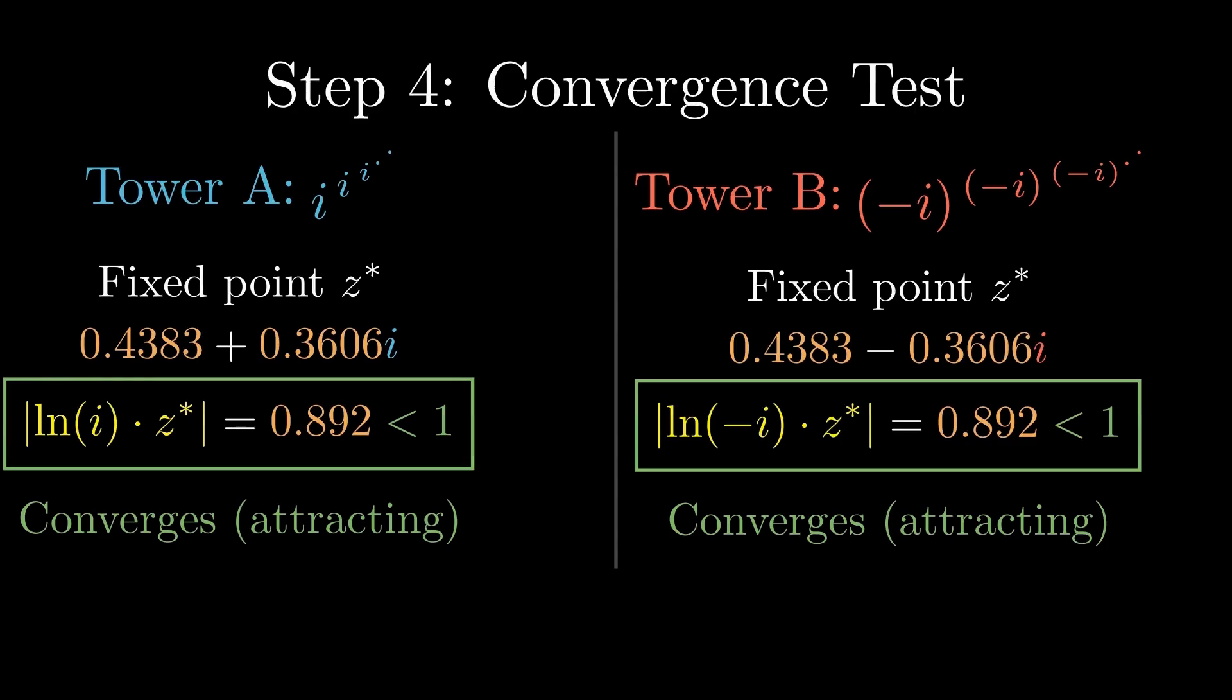For tower B, using negative i, the fixed point is the complex conjugate, and the same convergence test gives the same value. So both towers are attracting. They converge.